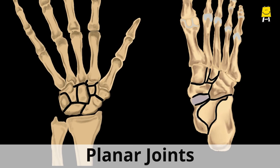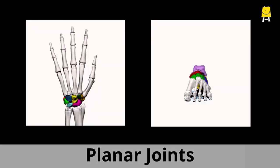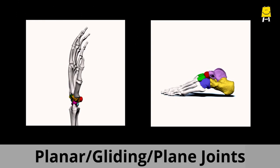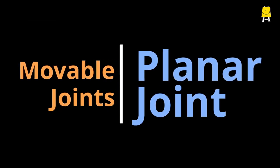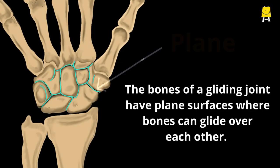These are the planar joints. They are also called gliding joints or plane joints. The bones of a gliding joint have plane surfaces where bones can glide over each other.